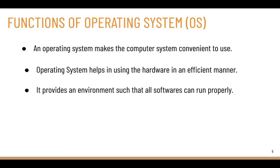Another function of the operating system is it provides an environment such that all softwares can run properly. First, we install the operating system — or it may come pre-installed from the manufacturer. All the softwares we want, like MS Word or Photoshop, run over and above the operating system. So the operating system provides the environment for all softwares to run properly.